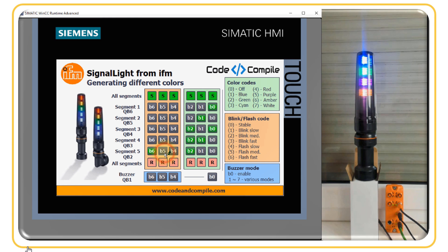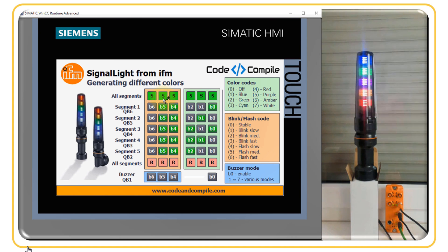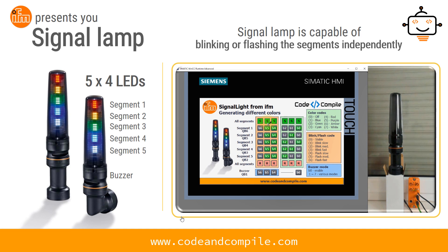At value four, flashing is slow. At five, it is medium. At six, it is fast. This is how you set the blinking or flashing frequency in your signal lamp. You can also blink or flash all segments together. This was the second example showing flexible blinking and flashing using the IFM signal lamp.